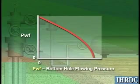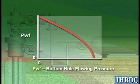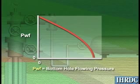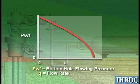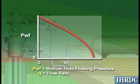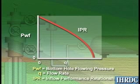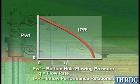Wally Gilbert, the father of modern production engineering, plotted the bottom hole flowing pressure versus the flow rate and referred to this curve as the inflow performance relationship, or IPR.